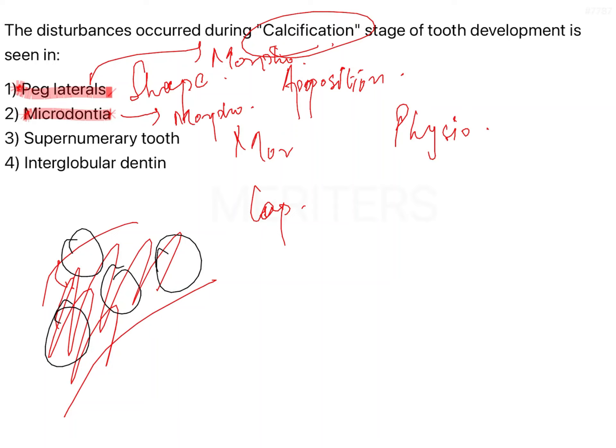Supernumerary tooth is when you have too many teeth compared to normal. An extra tooth has formed which is again normal — it is just supplemental, increased in number beyond the normal tooth count. That is why supernumerary tooth would come under the proliferation stage.